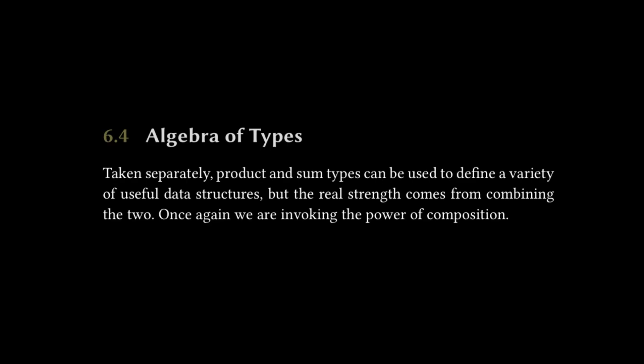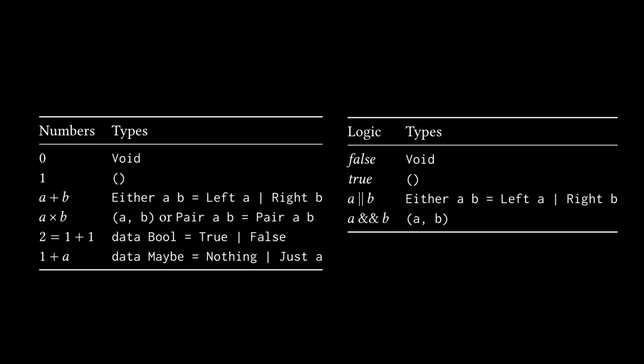Moving on to the final subsection, we have 6.4 Algebra of Types where the text reads, taken separately, product and sum types can be used to define a variety of useful data structures. But the real strength comes from combining the two. Once again, we are invoking the power of composition. And then the textbook goes on to show a bunch of examples how by combining these two, you can build up more complex data structures such as lists. But we're not going to go into that, I highly encourage you to read the full chapter or watch Bartosz Milewski's corresponding lecture, which cover this.